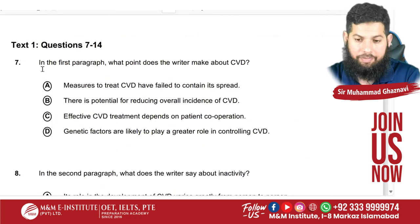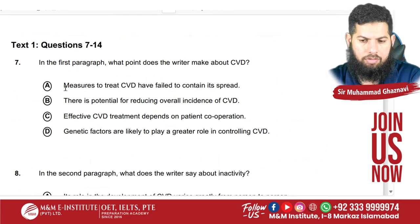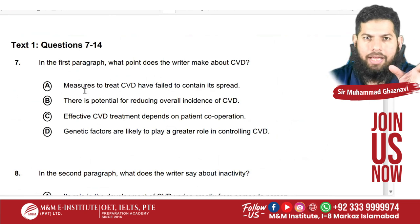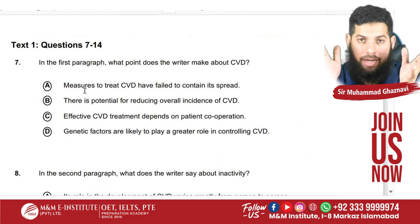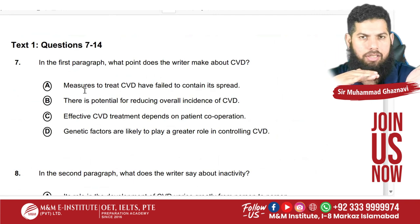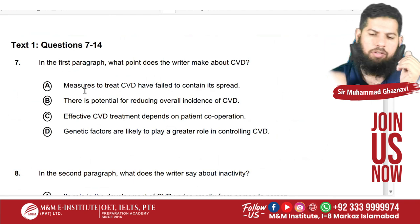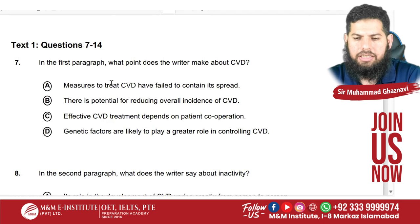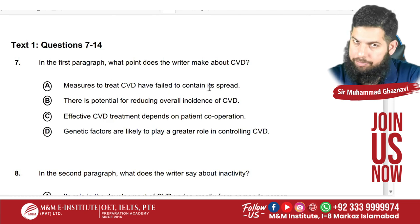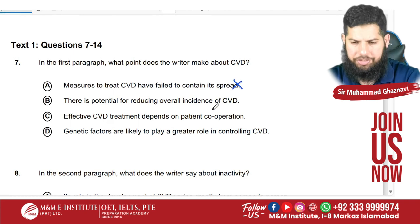Now we can go to the question. We like to work on the method of elimination. For example, if you take the main idea, they have made a comparison between CVD and other cardiovascular diseases — like CVD is expected to increase by 9%. And you can see that 'measures to treat CVD have failed to contain its spread' has not been discussed anywhere. So we cannot write that down as the answer. This is elimination.